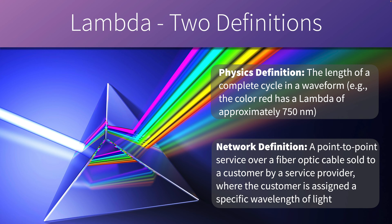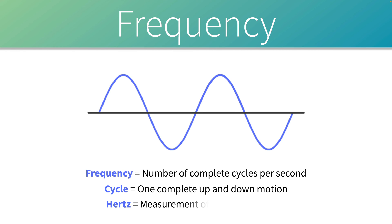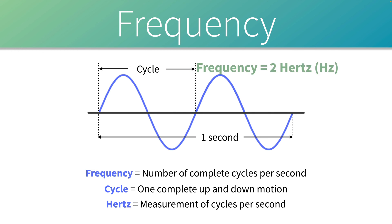Let's define some terms. Here we see a blue waveform going up from the center line (positive), then back down below (negative), and returning to start — that is one complete cycle. The number of cycles a waveform completes in one second is called its frequency. Here we see two cycles happen during a one-second period, so the frequency is two hertz. Hertz is a unit of measure meaning cycles per second.